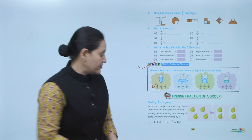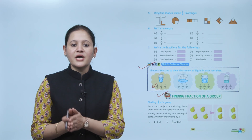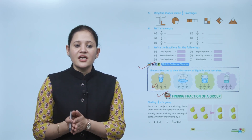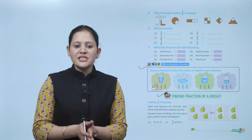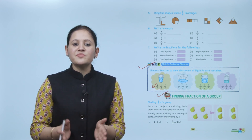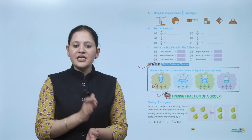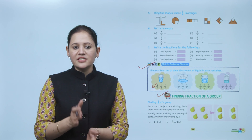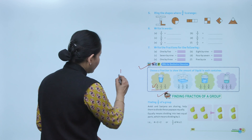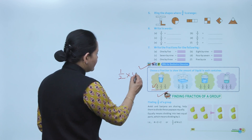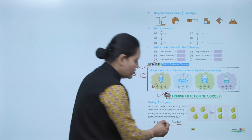Next is finding the fraction of a group. Finding 1 by 2 of a group: Ankit and Sanjana are sharing — help them divide these papayas equally. Equally means dividing into two equal parts, which means dividing by 2. Total number of papayas is 4, divided into two equal parts: 4 divided by 2 equals 2. So 1 by 2 of 4 equals 2.